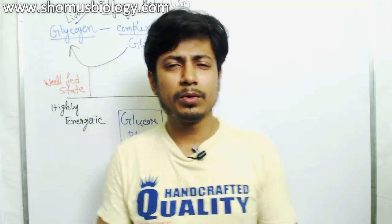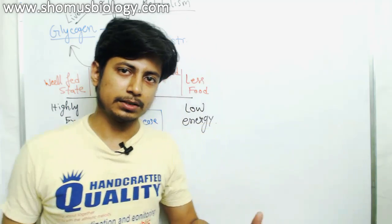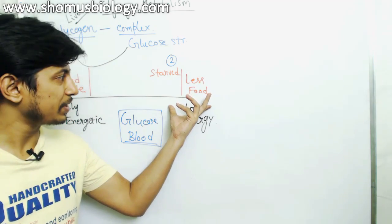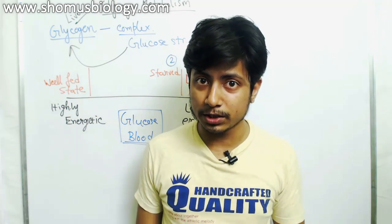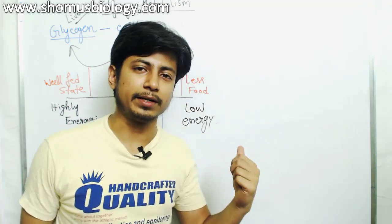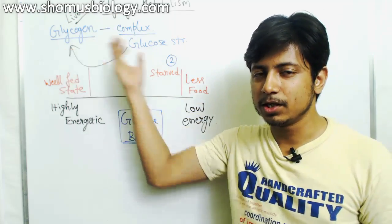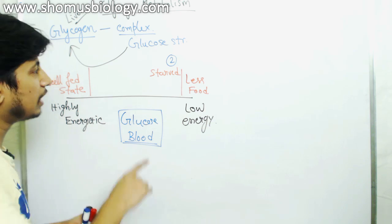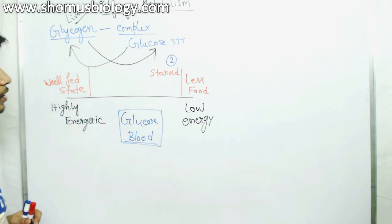Let's say at first we have a well-fed state and we stored some glucose as glycogen. Later, the same organism undergoes a starved or low-fed state. They need energy; otherwise vital functions may be halted. So we utilize the stored glucose that was present in the liver as glycogen — we take glycogen, break it down, and produce glucose, going from glycogen back to glucose.